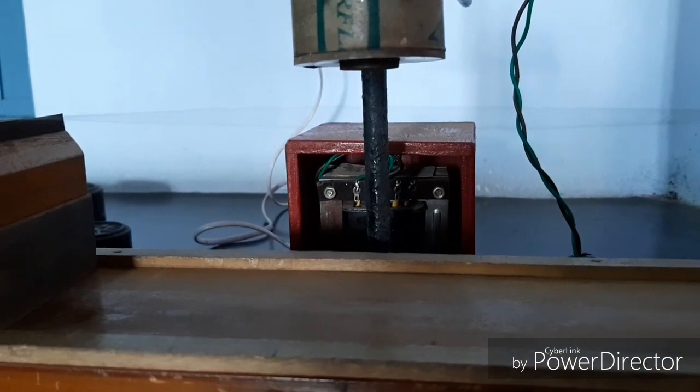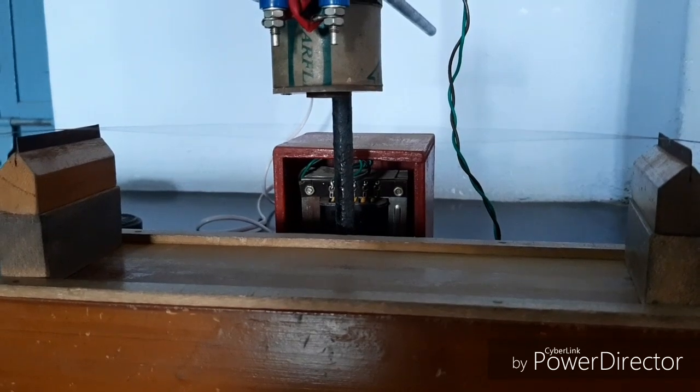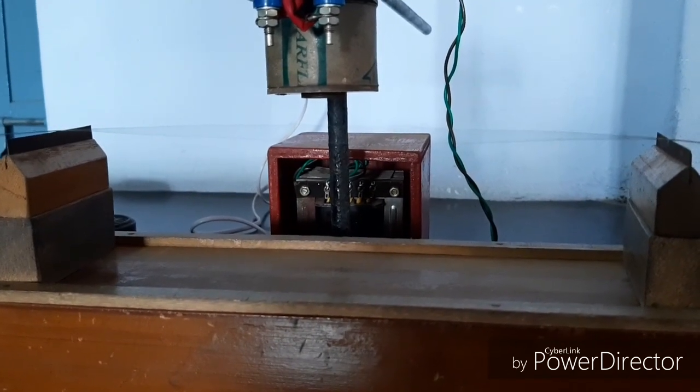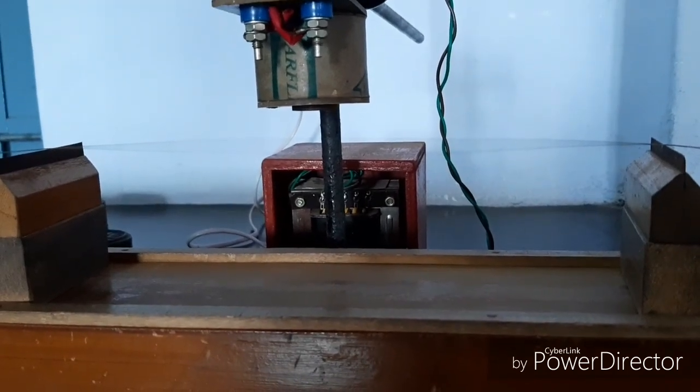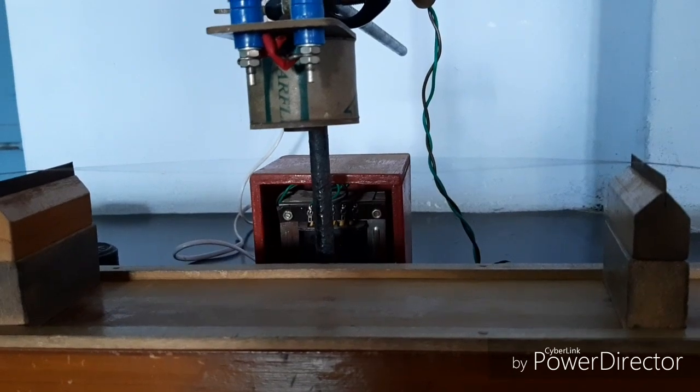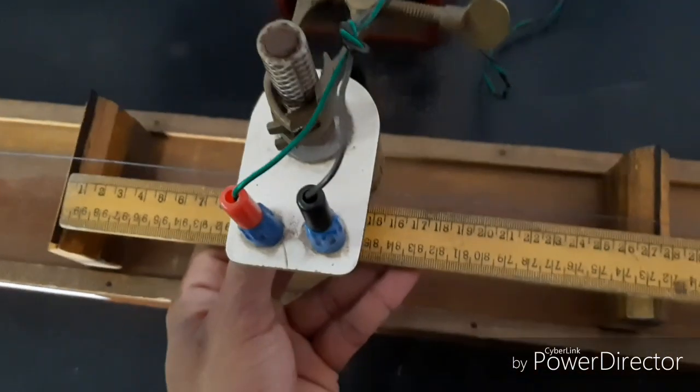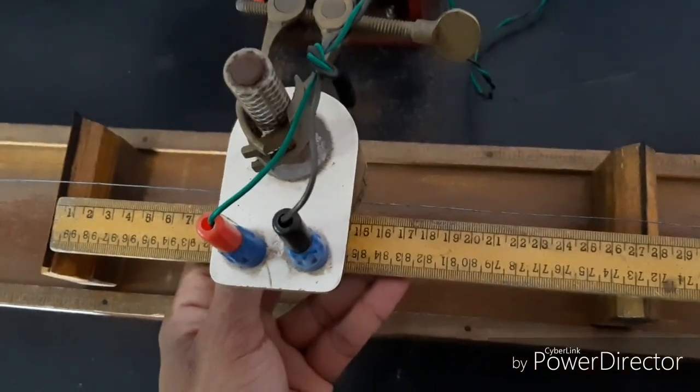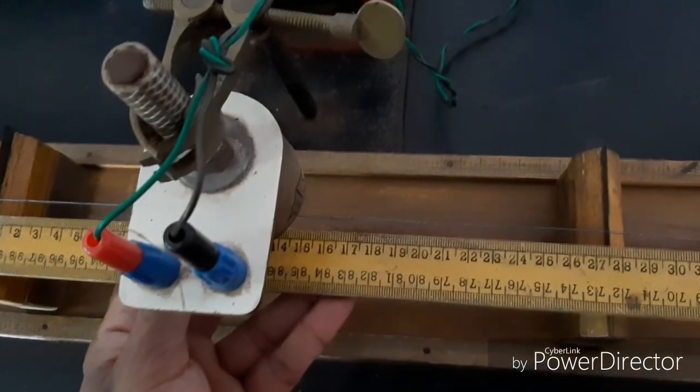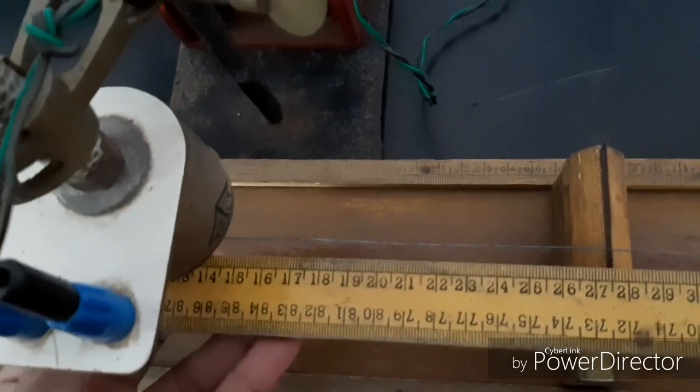Now move the wedges away such that we get maximum vibration. See here, wire is vibrating in a single loop. Now length between the two sharp edges is called resonating length and it is measured using meter scale. Make sure that wedges should be parallel to each other.